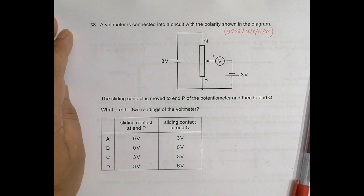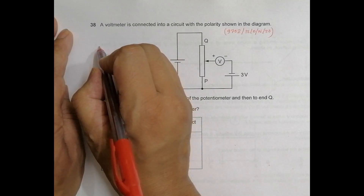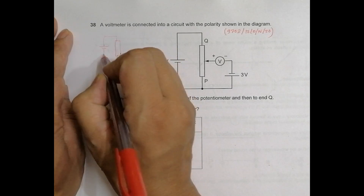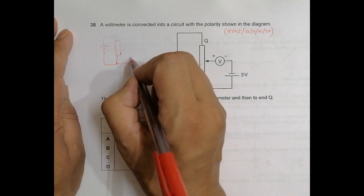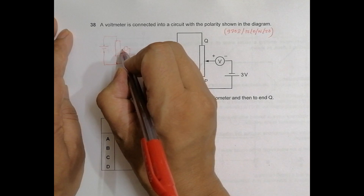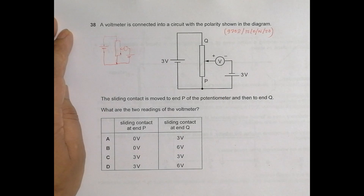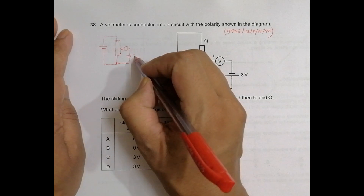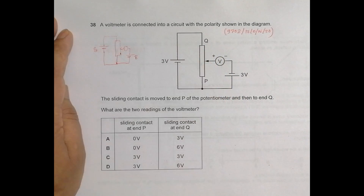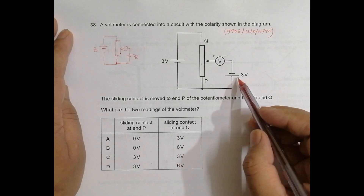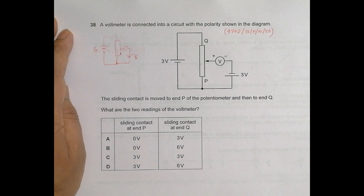This is a potentiometer arrangement. In our theory class, we drew the potentiometer connected to a source whose EMF we want to determine, with a meter connected and the polarities matching — same polarity — in order to find the EMF. We can find a balance point where the reading is zero. But here the polarity is opposite: minus where there was plus and plus where there was minus. So things are slightly different here.